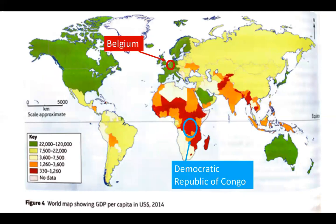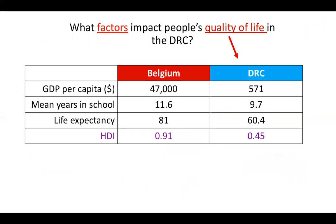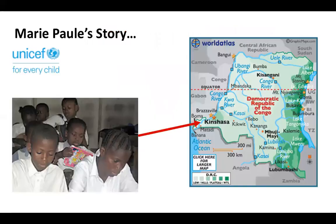We're going to compare Belgium, a European country, and the DRC — the Democratic Republic of Congo in central Africa. These are two incredibly different countries based on their development statistics. The statistics, including HDI, are economic and social measures of development. The DRC is an incredibly poor country that has suffered from civil war and political unrest, which has severely limited economic development and access to education in many rural parts.